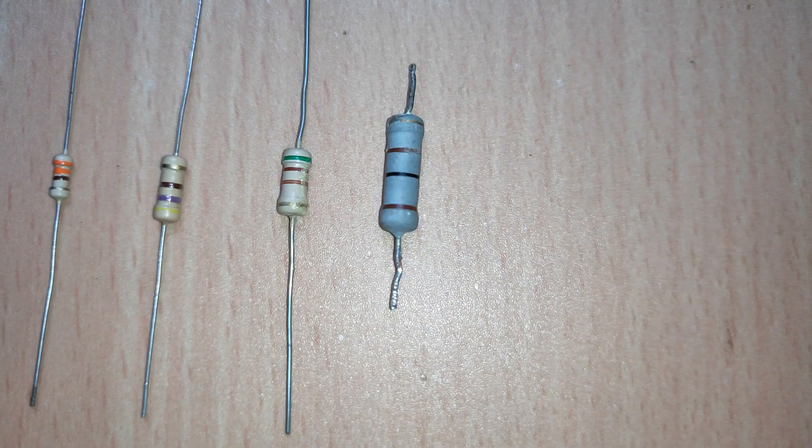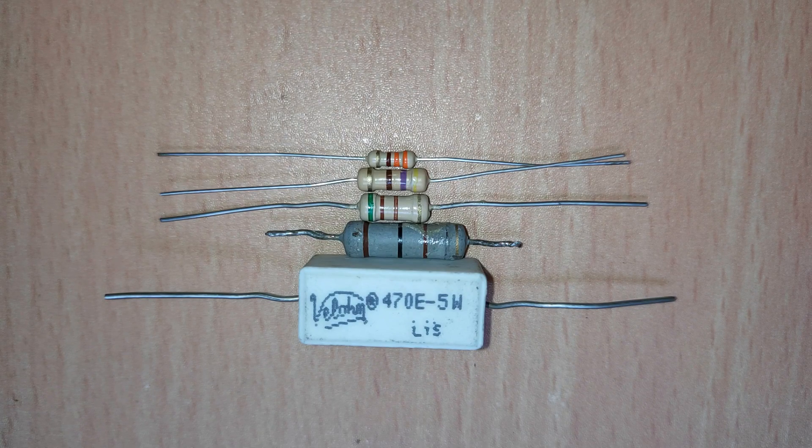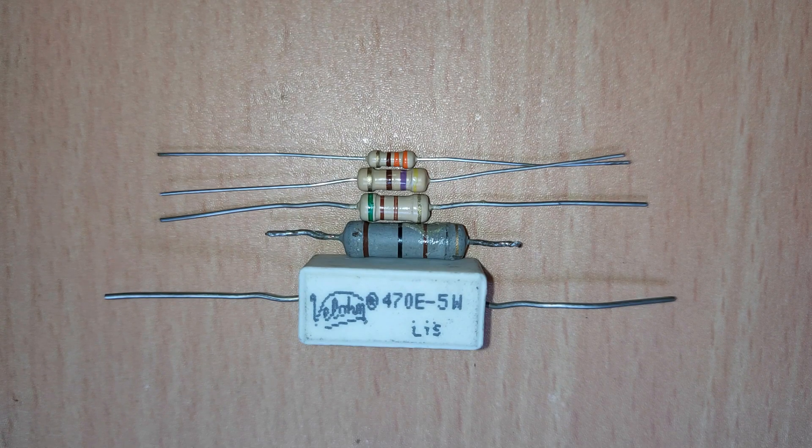Resistors come in many power ratings: quarter watt, half watt, one watt, two watt, five watt, and so on. When we line them up, we can see the difference in core size to dissipate the heat without burning itself.